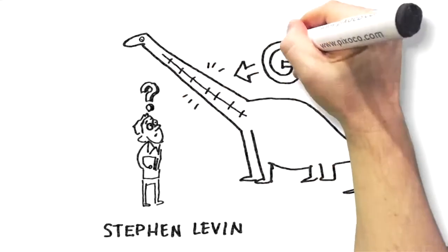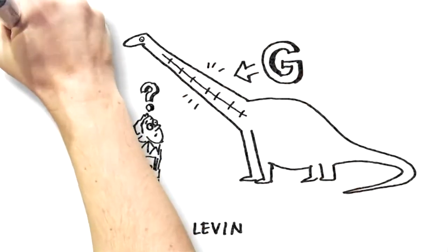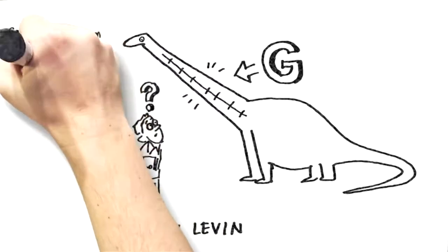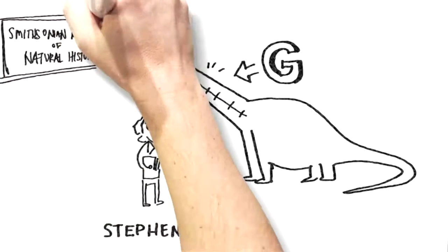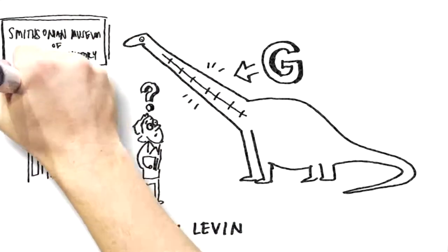It shouldn't be possible. In a body where muscles and skeleton work like levers, a throat of such length should never cope with the enormous force of gravity. The dinosaur would fall apart.